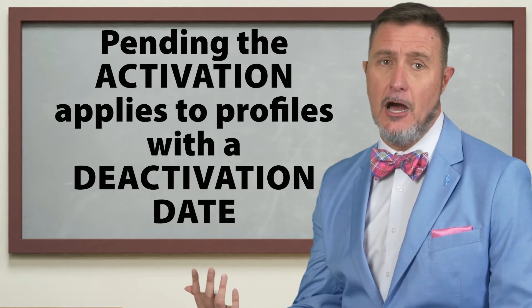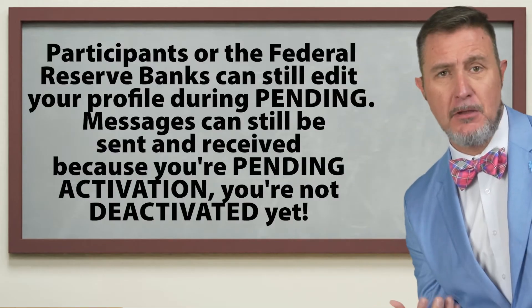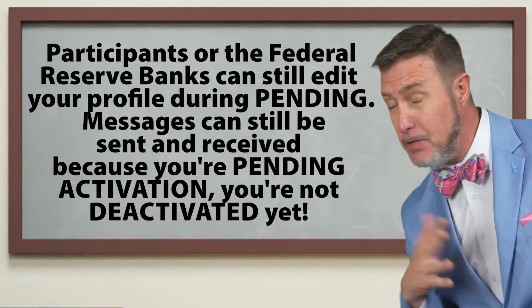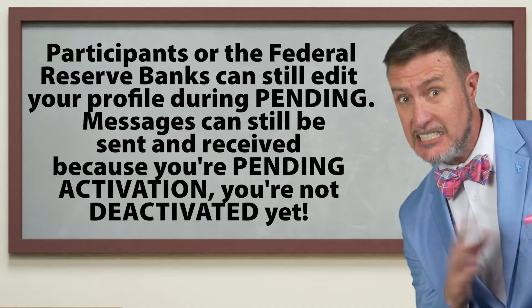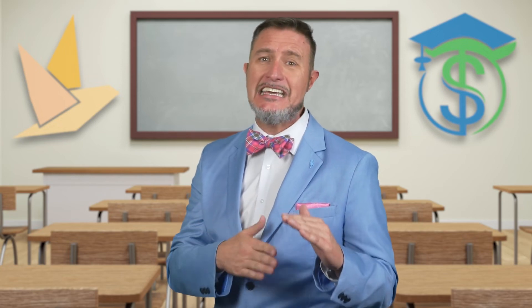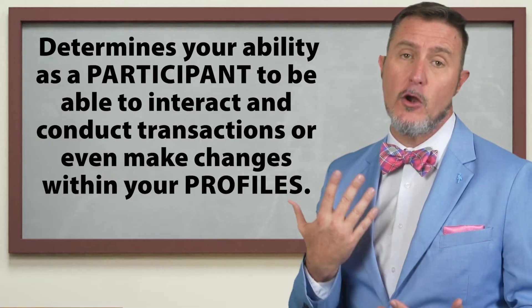Pending deactivation applies to profiles with a deactivation date. As a participant, you or the Federal Reserve Banks can still edit your profile, and messages can still be sent and received during pending deactivation — because you're not deactivated yet. This status remains as pending deactivation until the FedNow Service funds transfer day cycle date rolls over to the deactivation date, which will typically be 7:01 PM on that specific date.